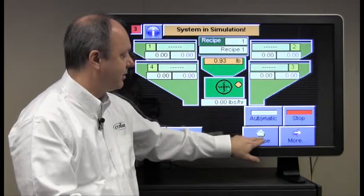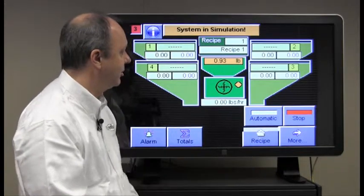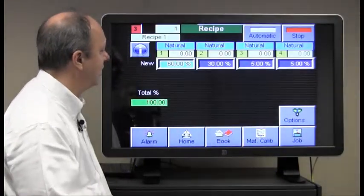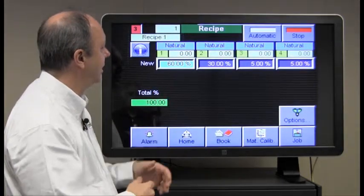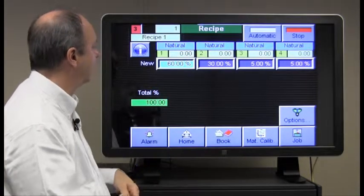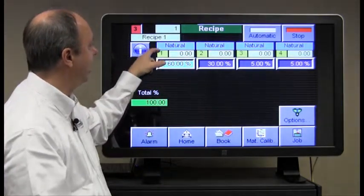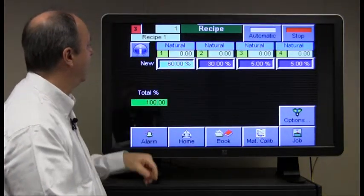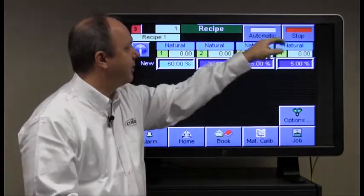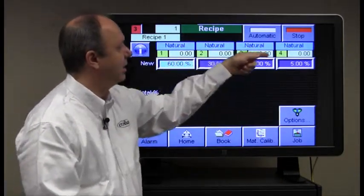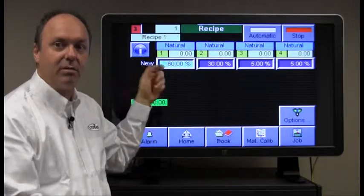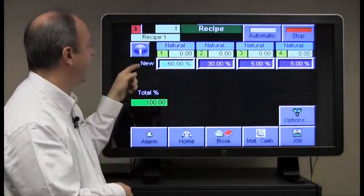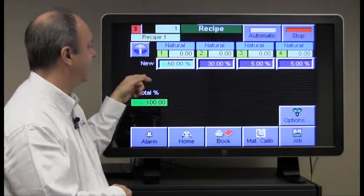So the operator accesses the recipe page by pressing the recipe button. It brings up the recipe page and at this particular screen we have all the material types set to natural as you can see across the top. The blender is stopped so the recipe that it's executing is shown on this line. It's actually shown as zero because the system is stopped and the new recipe that we'd like to execute.